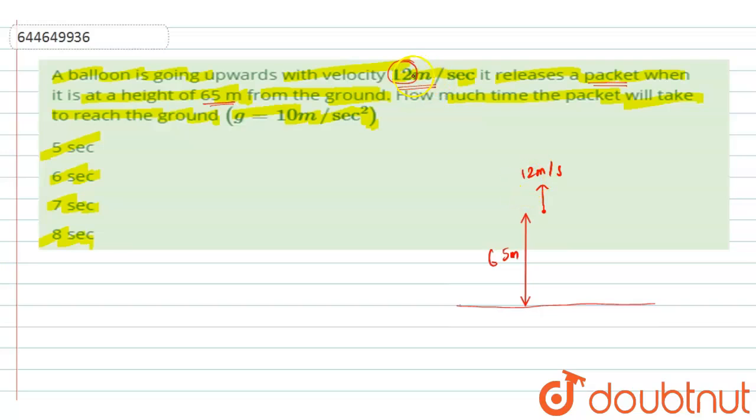So the packet's velocity would also be 12 meter per second with respect to ground. See, with respect to balloon, the velocity of the packet would be zero as it is moving with the balloon initially, but if we see with respect to the ground, the velocity of this packet would be 12 meter per second.